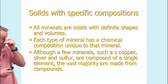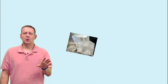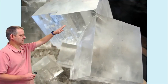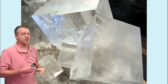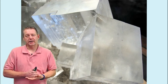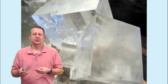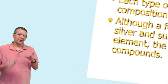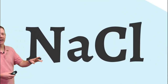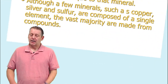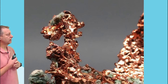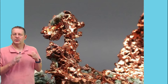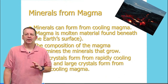Some minerals are compounds with multiple elements, like salt which contains sodium and chloride. But others, like copper, gold, sulfur, and silver, are composed of just a single element. Most minerals are compounds, though. This salt crystal has a nice cube shape and will always maintain that cube shape — it keeps breaking into smaller cubes, showing a repeating pattern.